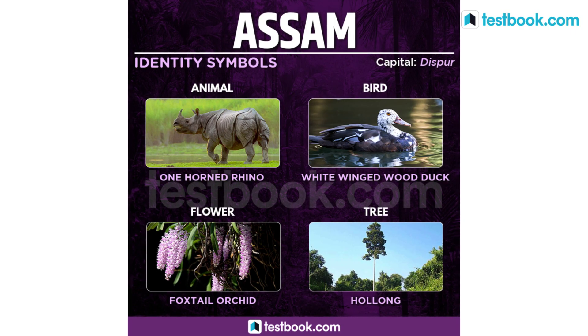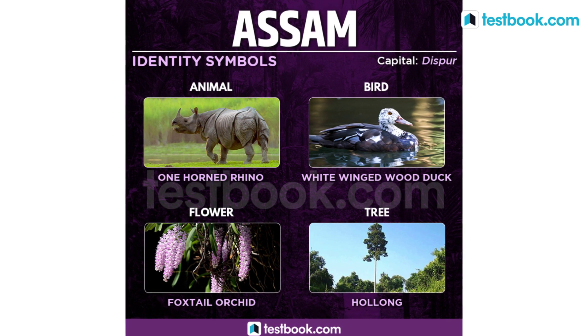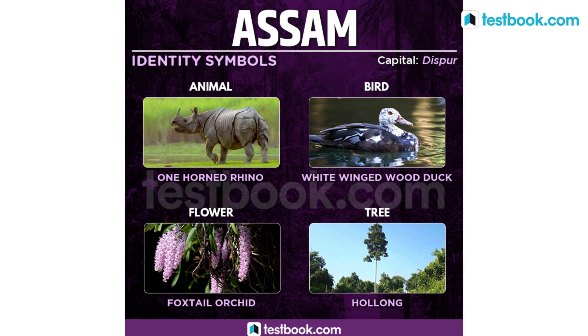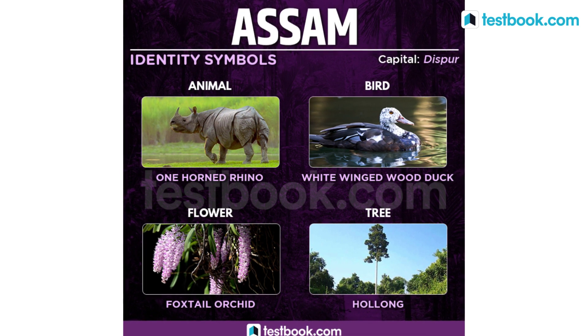For Assam, the One-Horned Rhinoceros is the state animal, White-Winged Wood Duck is the state bird, Foxtail Orchid is the state flower and state tree is Hollong.